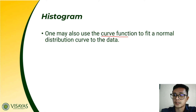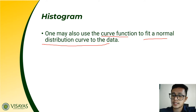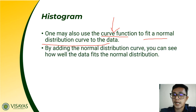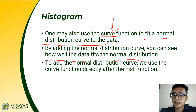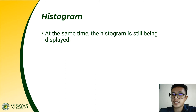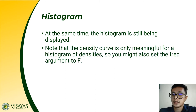We use the curve function to fit a normal distribution curve to the data. As mentioned, we can easily see whether data follows a normal distribution if the histogram has a curved line. This is done using the curve function. By adding the normal distribution curve, you can see how well the data fits the normal distribution. The curve function is always used directly after the hist function, and you should also set the freq argument to FALSE.